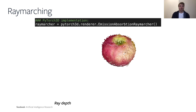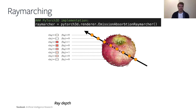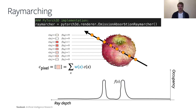Having described ray sampling, we now describe ray marching. One standard ray marcher is the emission absorption ray marcher, shown at the top of this slide with its initialization code. Before running the ray marcher, we execute the ray sampler to generate 3D points in the scene. These points are labeled with occupancies and colors as described before. Given this, the emission absorption ray marcher defines the rendered color as a weighted sum of the individual per-point colors.